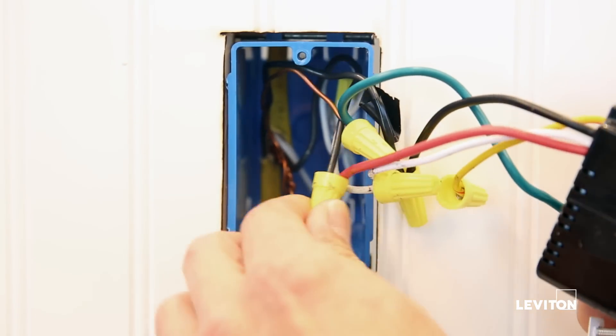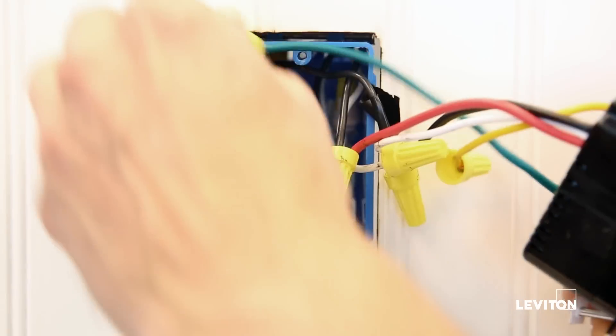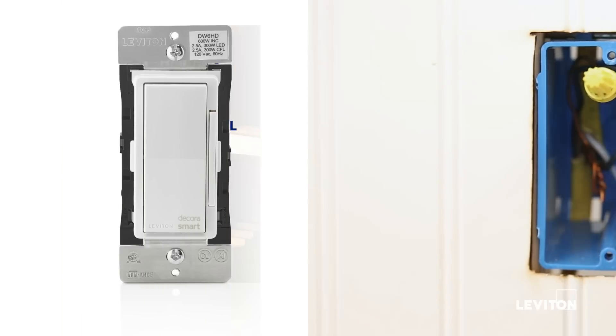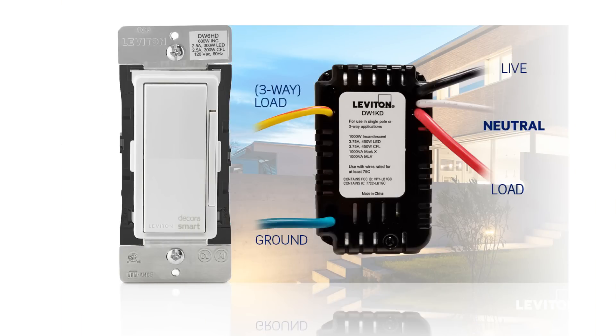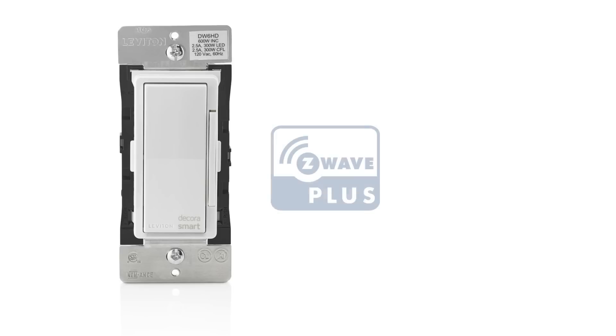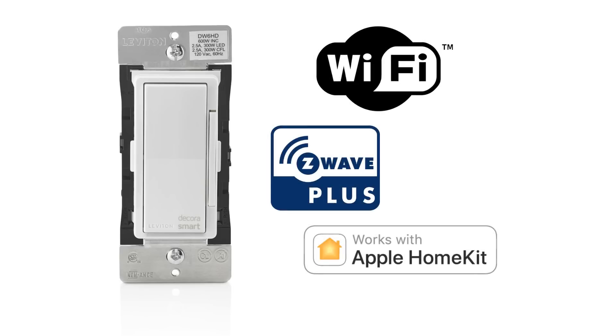This video will help you identify if a neutral connection is available in a light switch location. A neutral wire is required to install Decora smart devices, including Z-Wave, Wi-Fi, HomeKit, and select Decora Digital with Bluetooth solutions.